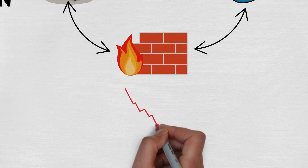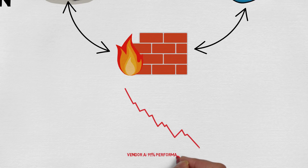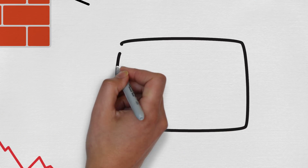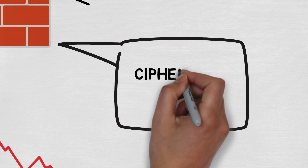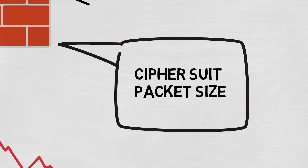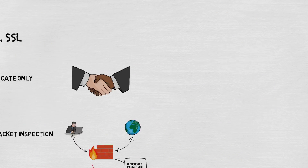In this year's NSS Next Gen Firewall report, there was one vendor who experienced as much as 91% performance degradation when they enabled SSL Deep Packet Inspection. Some vendors that employed custom ASIC saw performance decreases as little as 14%. When looking at any vendor's SSL performance numbers, take note of the cipher suite and packet size used. Not all SSL numbers are measured equally, and firewall vendors are notorious for posting weak ciphers and large packets to make their numbers look better than real-world performance.